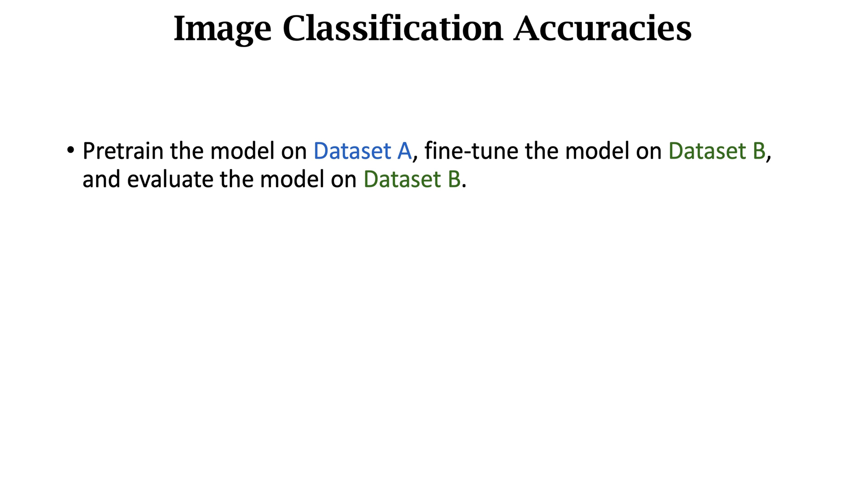The paper evaluates the models in this way. Pretrain the models on dataset A. Fine-tune the models on dataset B. And evaluate the models on the test set of dataset B. Dataset B is the target dataset. They use the test accuracy on dataset B as the evaluation metric.